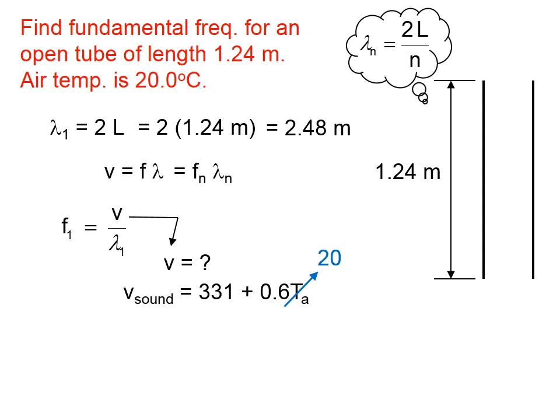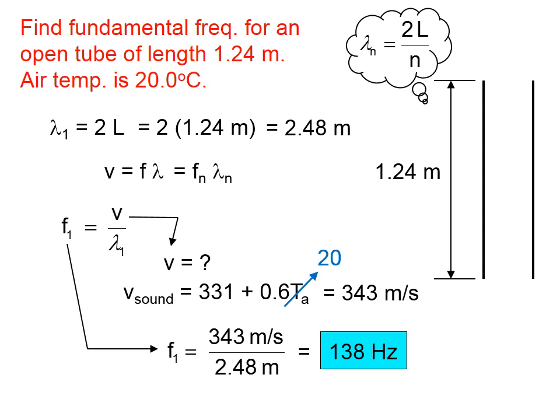The temperature here in Celsius is 20 degrees Celsius, so that tells us that the speed of sound through this tube in that temperature air will be about 343 meters per second. Now we know the numerator and the denominator, and we get 138 hertz.